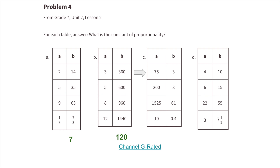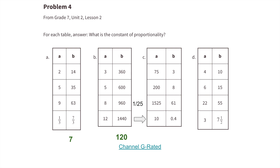Table C: 3 divided by 75 equals 3/75, which reduces to 1/25. 8 divided by 200 equals 8/200, which also reduces to 1/25. 61 divided by 1,525 equals 61/1525, which reduces to 1/25. And 0.4 divided by 10 is also 1/25. So the constant of proportionality for table C is 1/25.